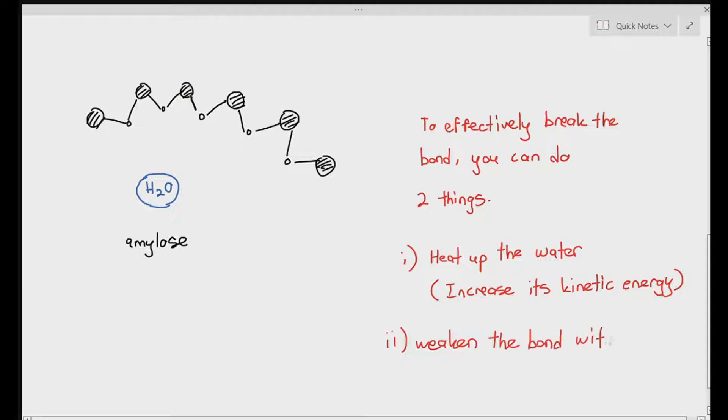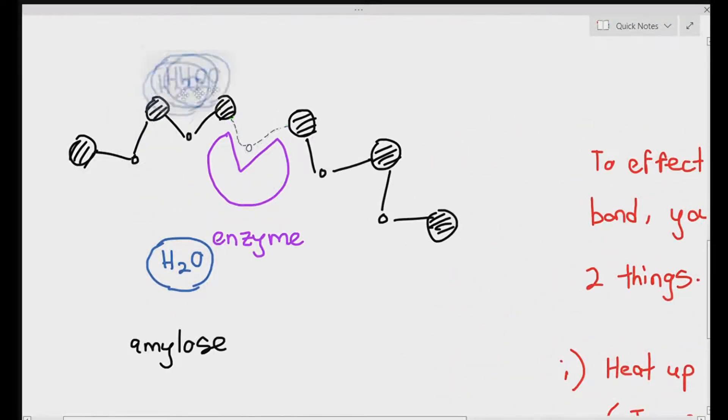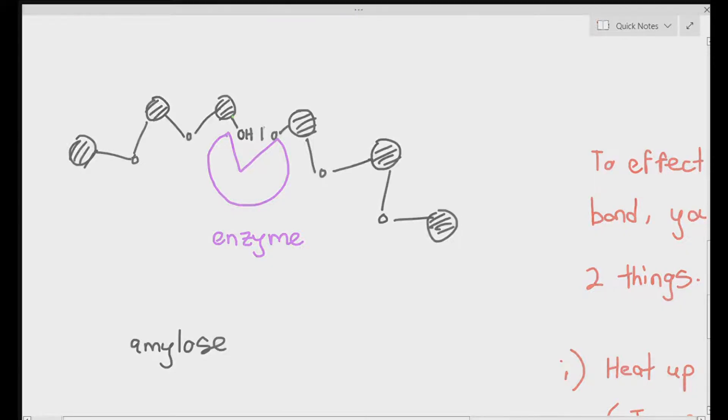So in that case, what you need to do is you may need to weaken the bond with a biological catalyst, such as an enzyme. So I'm just drawing an enzyme over there. And what the enzyme actually does is the enzyme... Immediately students will go, aha, the enzyme breaks down the bond for us. No, the enzymes do not break down the glycosidic bonds. All the enzyme does is the enzyme weakens the glycosidic bonds so that it's easier for the water to break it down. So that's what enzymes are supposed to do. That's just an introduction to why an enzyme is important.